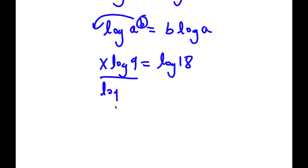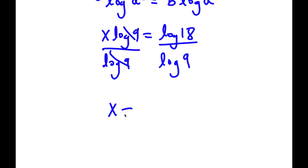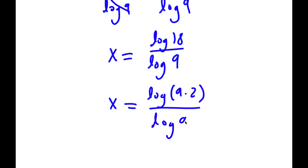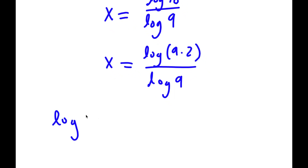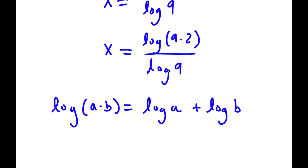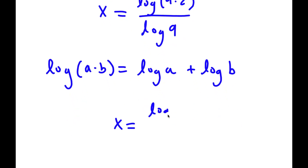Now I'm going to divide both sides by log 9. These two cancel out, and I have x is equal to log 18 over log 9. Now, log 18 is the same thing as log of 9 times 2. And if I have something in the form log a times b, this equals log a plus log b. So log 9 times 2 equals log 9 plus log 2.